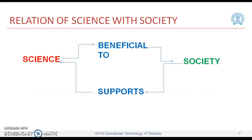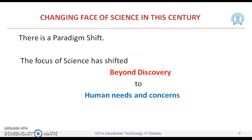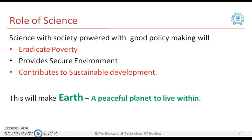Let us look at the relation of science with society. Science is beneficial to the society; in turn, society supports science. There is a changing phase of science in this century — a paradigm shift. The focus of science has shifted beyond discovery to human needs and concerns. Science with society, powered with good policy making, will eradicate poverty, provide a secure environment, and contribute to sustainable development. This will make Earth a blissful planet to live in.